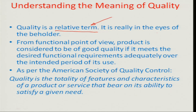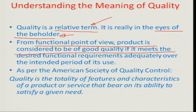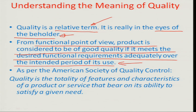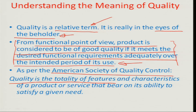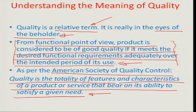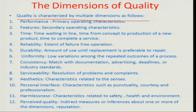Quality is really dependent on the eyes of the beholder — who is the customer and how they treat quality. From a functional point of view, a product is considered good quality if it meets the desired functional requirements adequately over the intended period of its use. The definition of quality as per the American Society of Quality Control says that quality is the totality of features and characteristics of a product or service that bear on its ability to satisfy a given need — and need means customer need. There are principally about 12 dimensions related to the product into which you can categorize its quality.